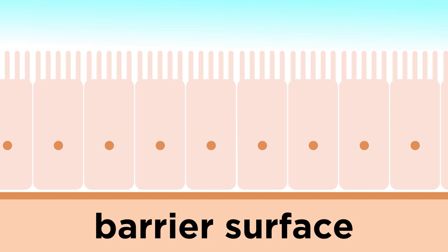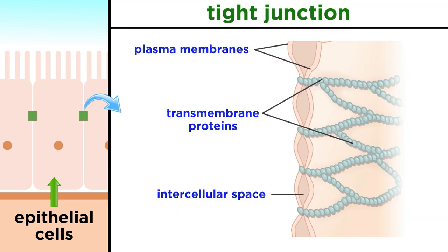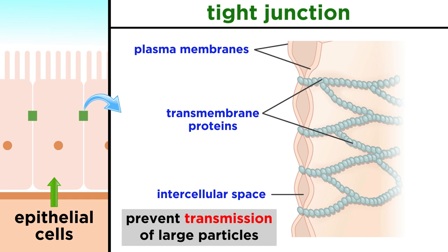Despite having some key differences, all barrier surfaces have a few common features. The first is that barrier surfaces are generally lined by epithelial cells that are connected by tight junctions. Tight junctions are intercellular connections that form between adjacent cells, which prevent large particles and microbes from passing through to the other side. As long as an epithelial barrier isn't compromised, it should be sealed off to most pathogens.